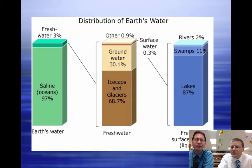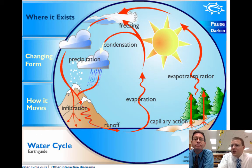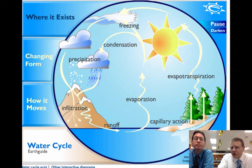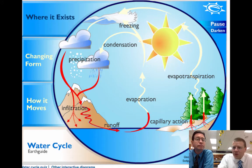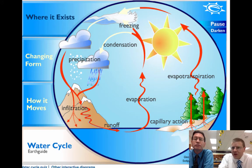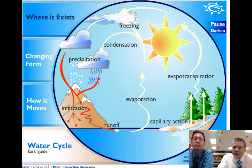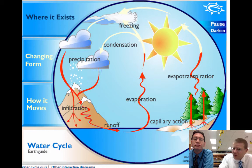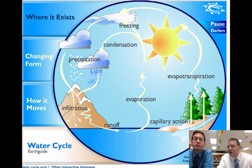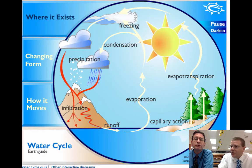But when you add this all together, it's not very much that's actually available for us to drink. So potable water is one of the biggest water shortages in the world. Since we know that there's water pretty much everywhere, how does it move? We've got this little animation here showing you the process of water going from liquid into water vapor through evaporation.